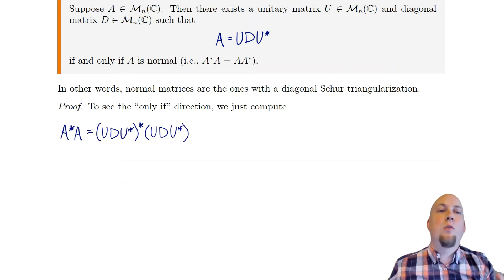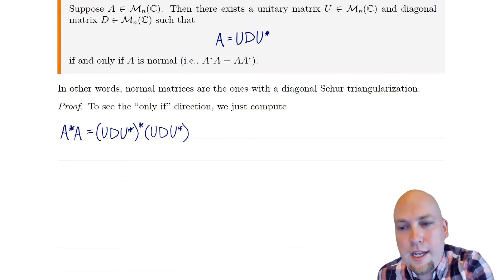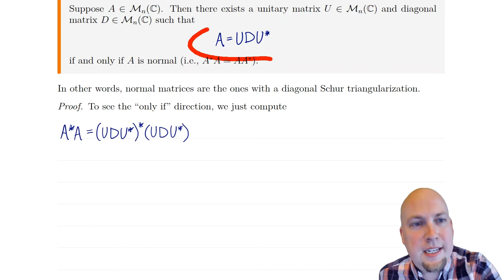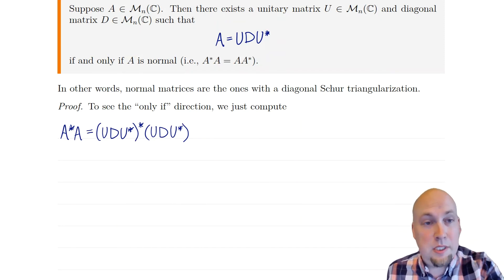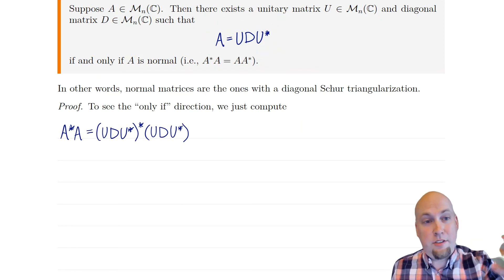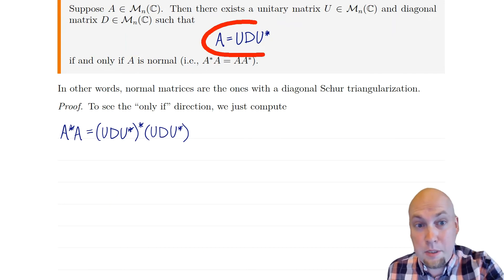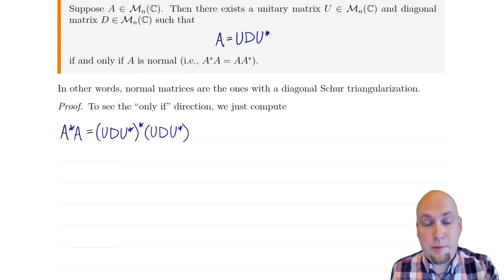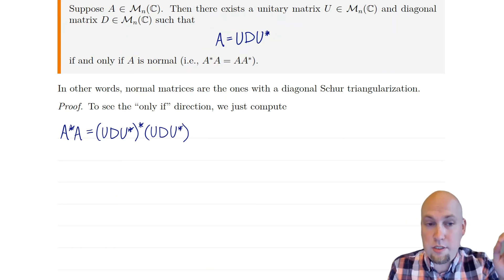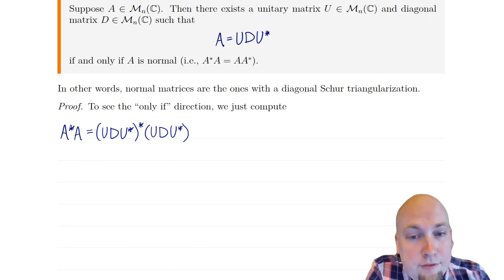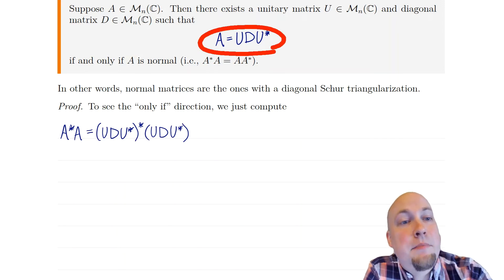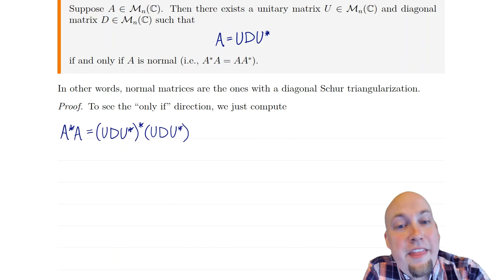It's an if-and-only-if theorem — an exact characterization of which matrices can be decomposed in this way. If a matrix is normal, it can be decomposed in this way, and if a matrix can be decomposed in this way, then it's normal. So we have to prove both directions. Let's show the only-if direction: if a matrix can be decomposed in this way, then it's normal.